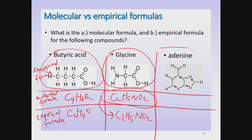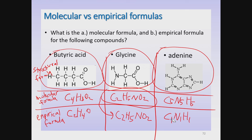Finally, adenine is a base found in DNA. If you look carefully at the structural formula, there are five carbons, five nitrogens, and five hydrogens — that is the molecular formula C5N5H5. Can we reduce this to a simpler whole number ratio? Yes — dividing all fives by five gives one each, so C1N1H1. Since we don't write subscripts of one, the empirical formula for adenine is CNH. Okay, thank you for listening — we'll see you next time.